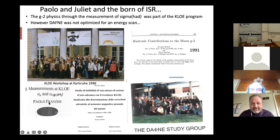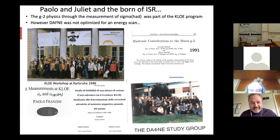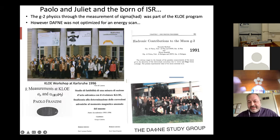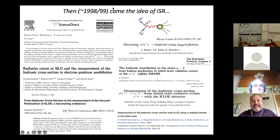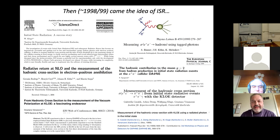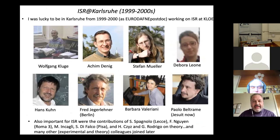This is something true, and now after many years the anomalous magnetic moment is finally called the mu anomaly, which was not the case previously. Paolo and Juliet and the CHLOE ISR program: the g-2 physics through the measurement of the hadronic cross section was part of the CHLOE program, but DAFNE was not optimized for the energy scan. Here is a picture from a CHLOE workshop in Kraków in 1996, which was seminal for this activity — it was realized then that doing the measurement of the hadronic cross-section at CHLOE would not be easy because the permanent quadrupoles of DAFNE make it hard to scan the energy.